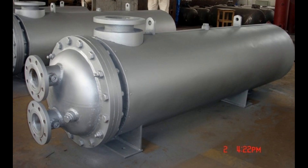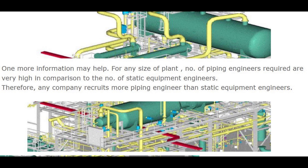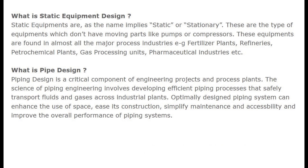First, we will know brief details about what is static equipment design and pipe design, and which of these is better to choose for our career. What is static equipment design? Static equipment, as the name implies, is static or stationary. These are the type of equipment which don't have moving parts like pumps or compressors. These equipment are found in almost all the major process industries, e.g. fertilizer plants, refineries, petrochemical plants, gas processing units, pharmaceutical industries, etc.